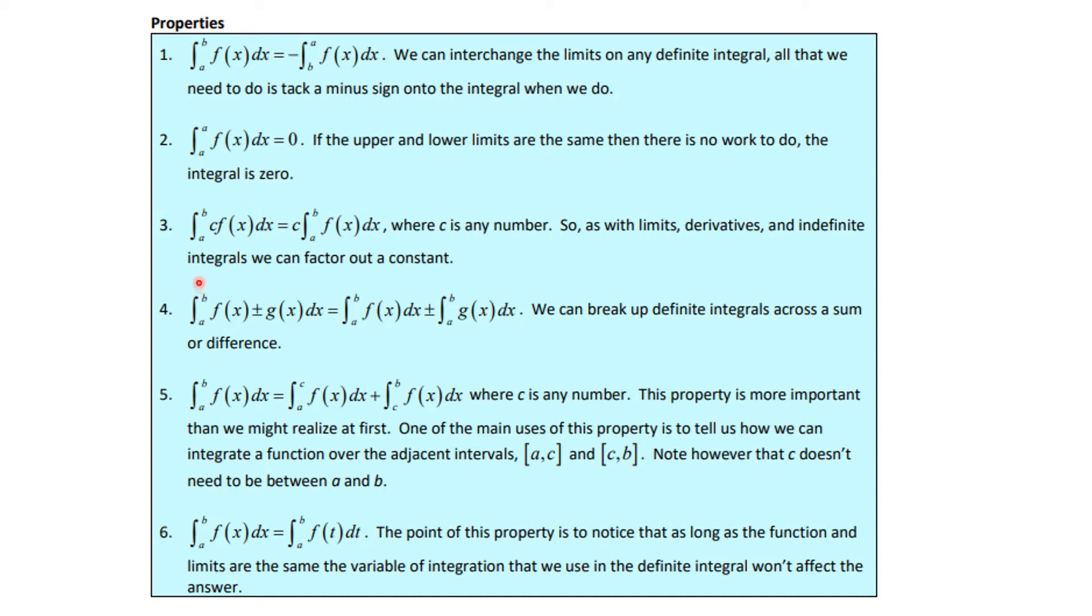Number three: the definite integral from a to b of c times f(x)dx, where c is a constant, is the same thing as c times the integral from a to b of f(x)dx. This means that you can jerk the constant through the integral sign. I will do this ten times out of ten to simplify the calculation, and this makes sense because this is a limit and we know that the constant times a limit is the limit of the constant times a function.